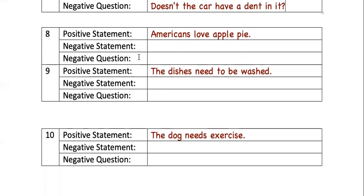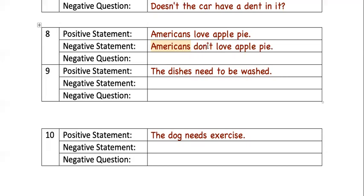Number eight: the positive statement is 'Americans love apple pie.' The negative statement is 'Americans don't love apple pie.' We use 'don't' instead of 'doesn't' because 'Americans' is plural — more than one. Since we don't need the 's' in 'doesn't,' we just add 'don't.' The negative question is: 'Don't Americans love apple pie?'